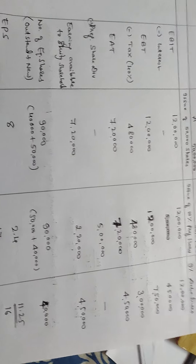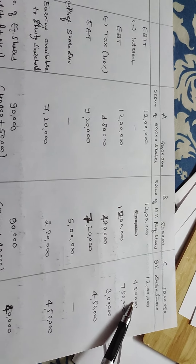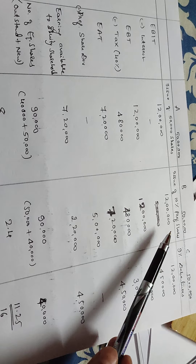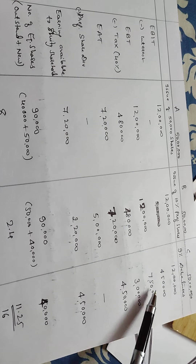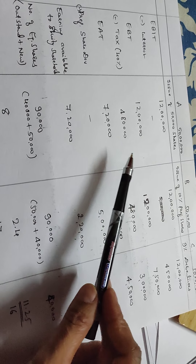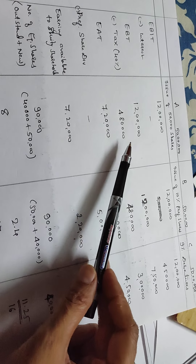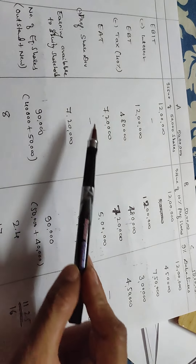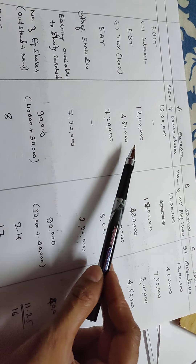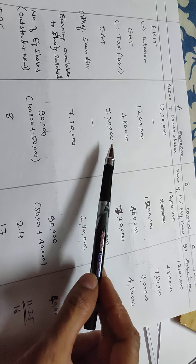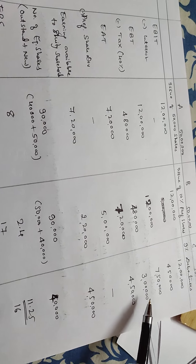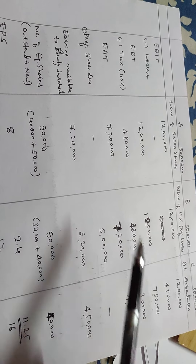Interest on existing 7% debentures is 4,50,000. So earning before tax: in the equity shares case it remains 12,00,000 less interest 4,50,000 giving 7,50,000. Tax at 40%: in the first case tax is 4,80,000; in the debenture case, 40% of 7,50,000 is 3,00,000.